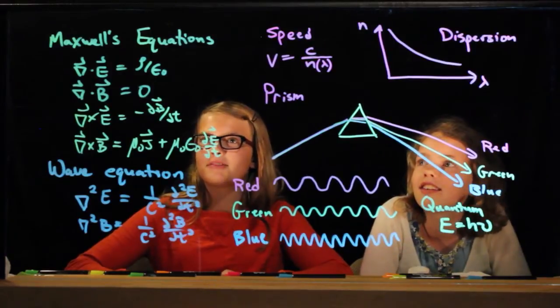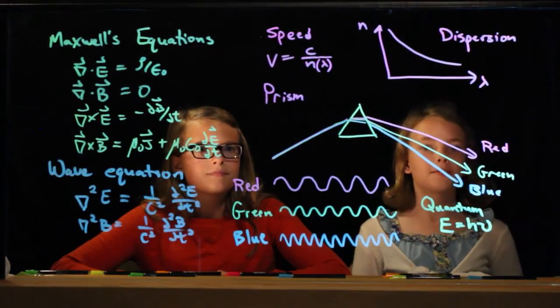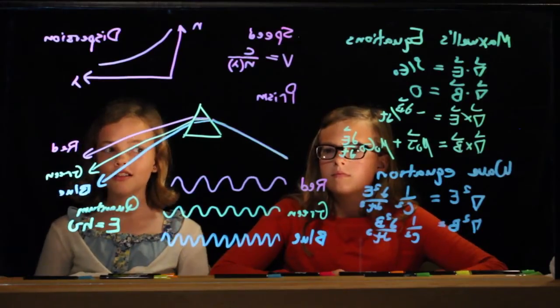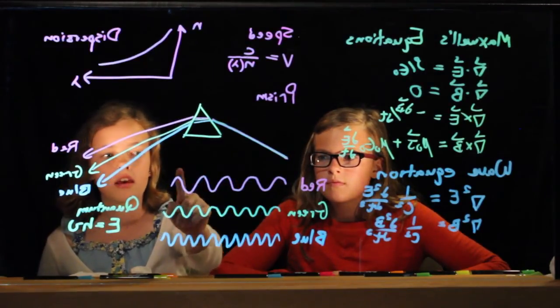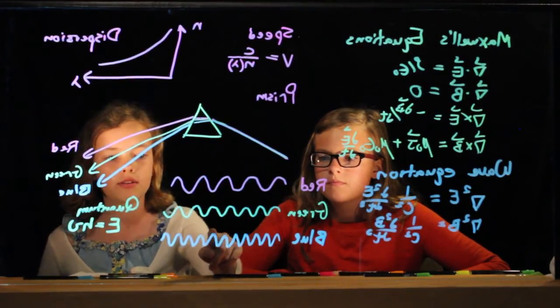Color is light. And light is governed by Maxwell's equations. And a prism which separates the colors. The three different colors have different wavelengths. Red has a long wavelength, but blue has a very short wavelength.